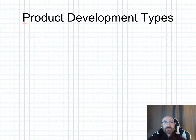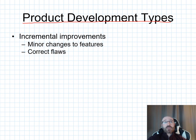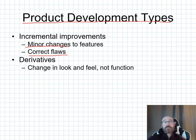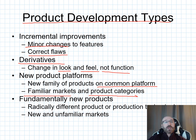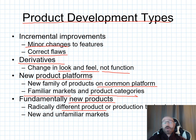Within product development, there are different types. An incremental improvement is a minor change to features or corrects flaws. Derivatives change the look and feel but not the function. New product platforms introduce a new family of products on a common platform in familiar markets. A fundamentally new product uses radically different production technology and targets new, unfamiliar markets.